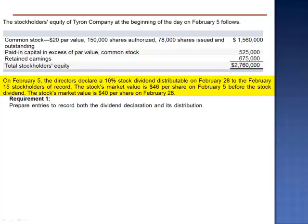On February 5th, the directors declare a 16% stock dividend, distributable on February 28th to the February 15th stockholders of record. The stock's market value is $46 per share on February 5th, before the stock dividend. The stock's market value is $40 per share on February 28th. We are asked to prepare journal entries to record both the dividend declaration and its distribution.